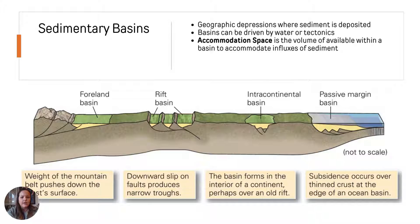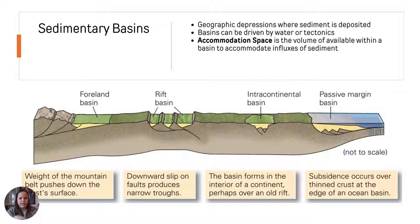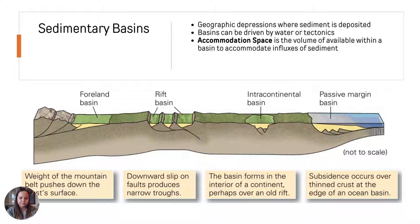Sedimentary basins are areas where sediment is deposited. We're looking at depositional environments and basins driven by water or tectonics. Examples include passive margin basins, intercontinental basins, rift basins, and foreland basins. Each basin needs to have an accommodation space — if it doesn't have enough accommodation space, it can't accommodate the sediment. We want to have a good available volume within a basin to allow for more sediment to be deposited; otherwise, that sediment will move on or completely change the landscape entirely.